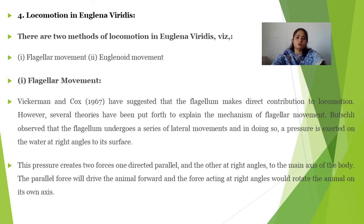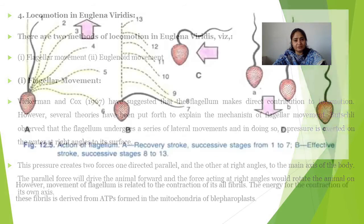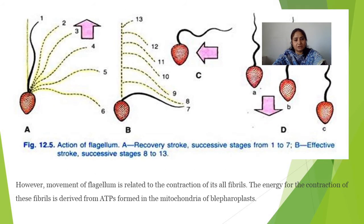Locomotion in Euglena is basically of two types: flagellar movement and euglenoid movement. In flagellar movement, the flagellum moves from tip to base. The effective stroke propels the organism forward, while the recovery stroke brings the flagellum back to its position. This causes Euglena to move forward.